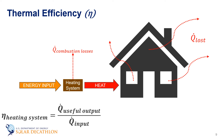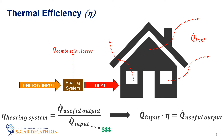Looking at the efficiency equation, I can take the input and multiply it by the efficiency in order to get the output. The output is determined by the heat loss from the building, so for a short period of time, this is the heat transfer rate we calculated earlier. If I increase my efficiency, the output is constant, but an increase in efficiency will reduce the input and hence reduce the amount of fuel we have to purchase.